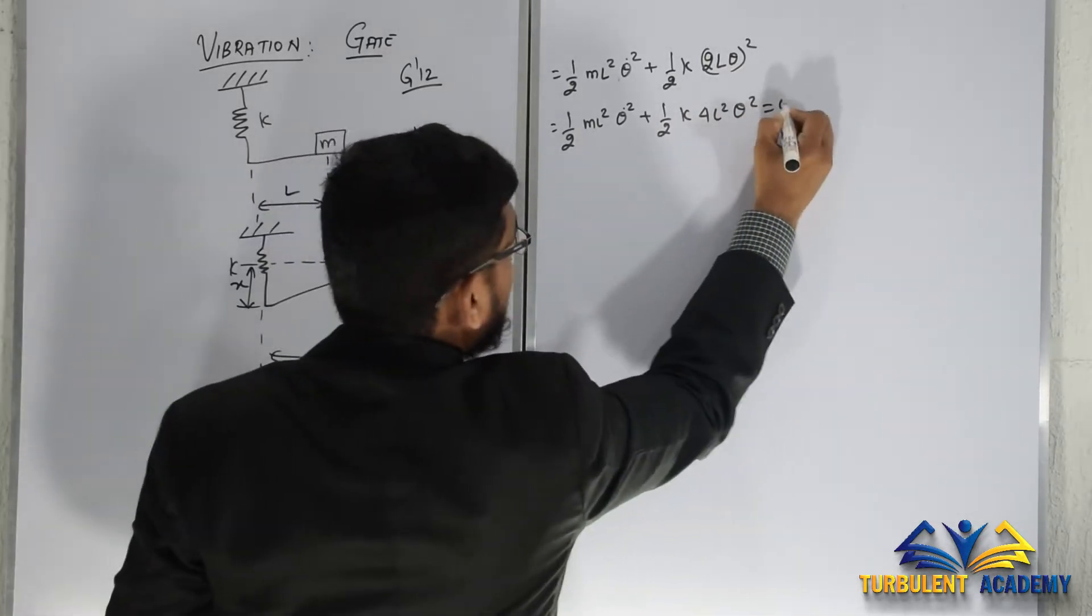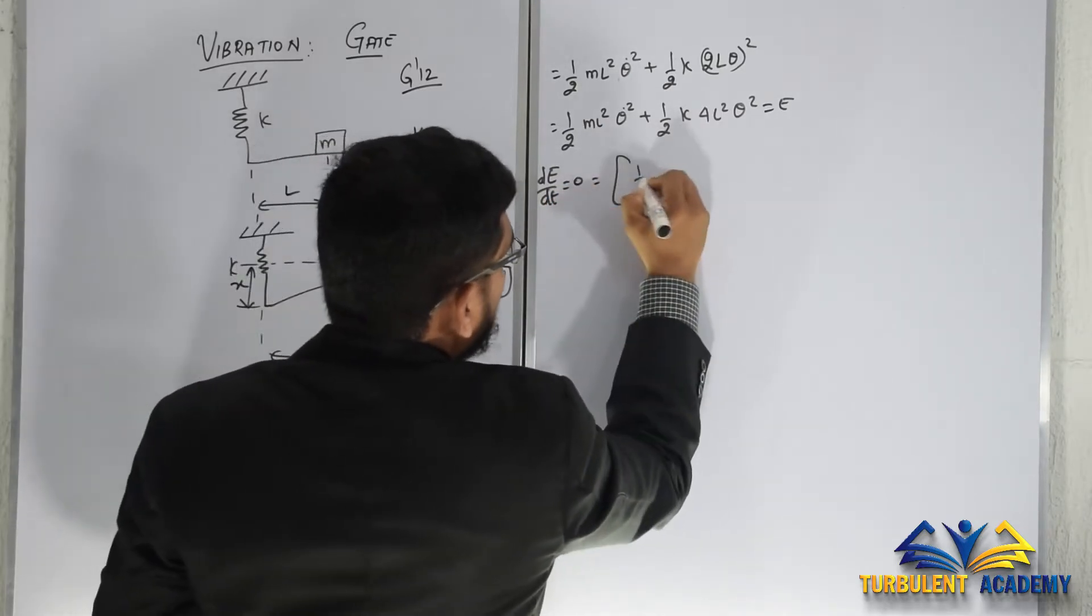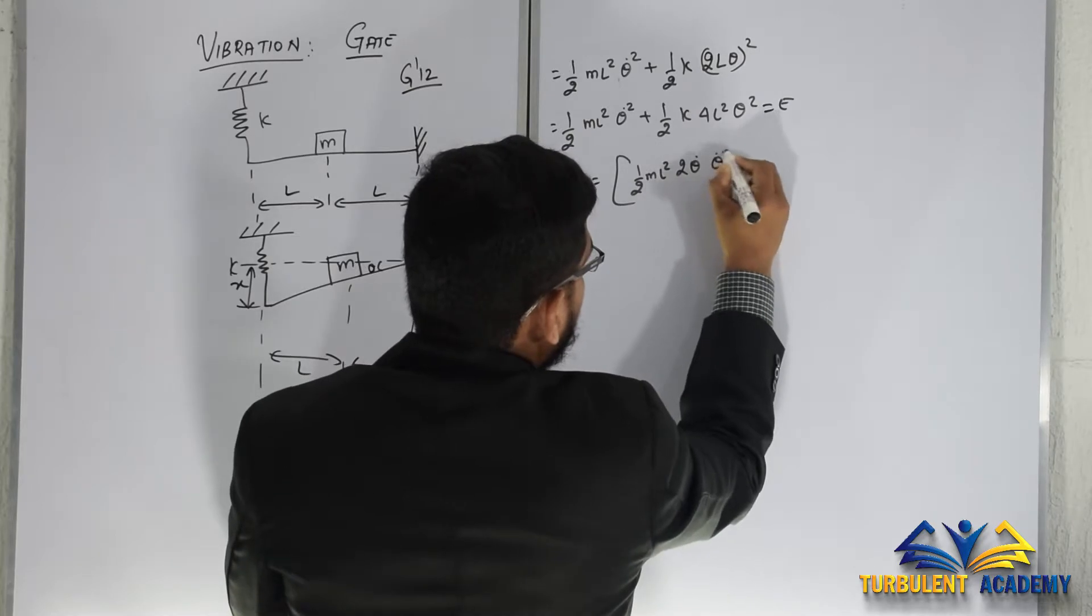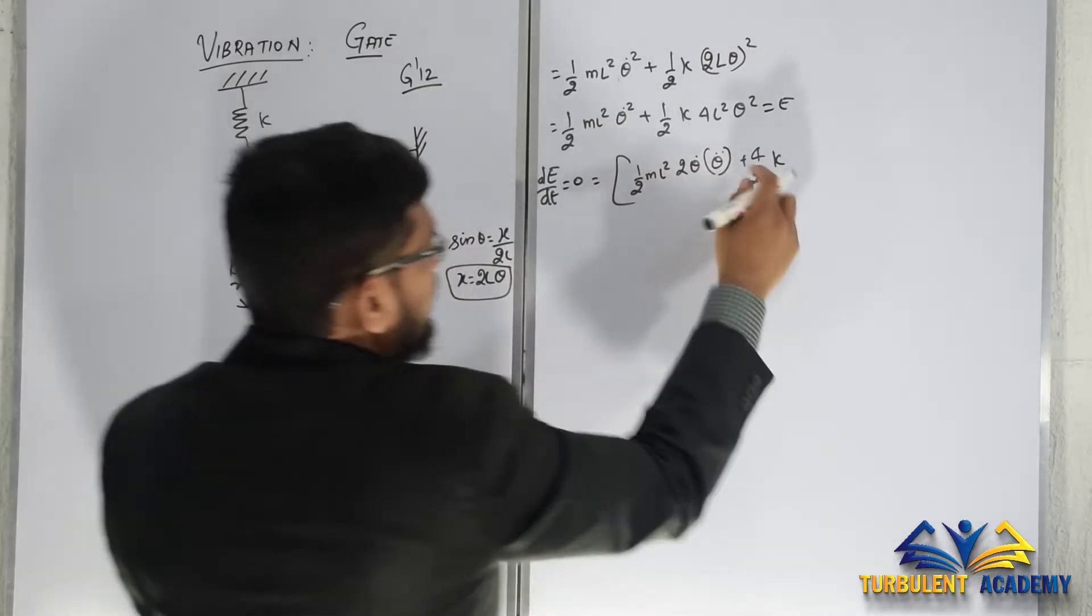d by dt equal to 0 equals half ml squared 2 theta dot into theta double dot plus half k, so let's take 4 inside, 4 by 2 kl squared 2 theta into theta dot.